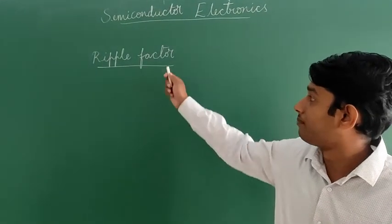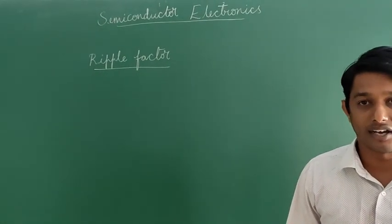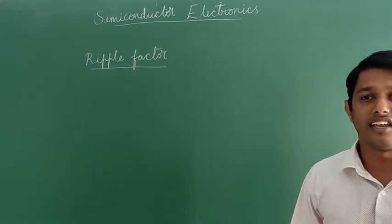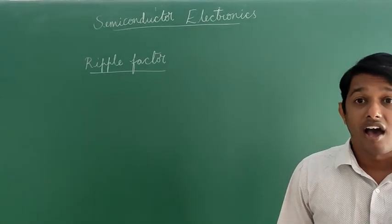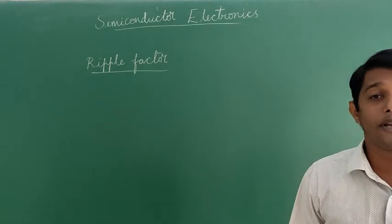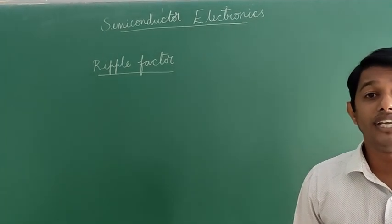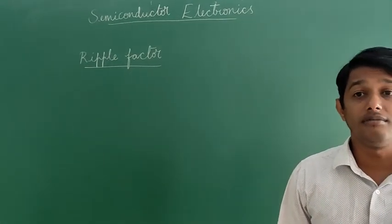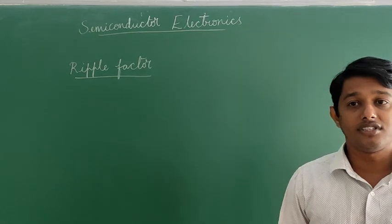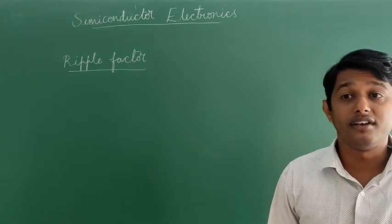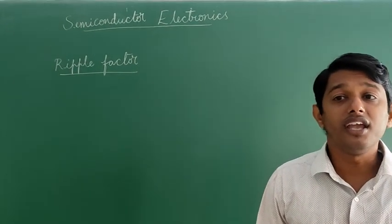The next topic is ripple factor. An alternating current component superimposed on a direct current component results in the instantaneous value of the unidirectional current or voltage. This term is particularly applied to the output of the rectifier. The frequency of the AC component in the ripple is called the ripple frequency. For a full-wave rectifier, it is twice the frequency of the input signal.